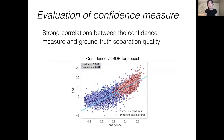The first thing we investigate is whether the confidence measure correlates with ground truth separation quality measured by signal-to-distortion ratio (SDR). In this graph, each dot represents a separated source by the speech model on speech mixtures, and the blue line is the best fit from linear regression. The graph shows a clear relationship between confidence and SDR with an R-value of 0.85. We also note that same-sex mixtures are harder to separate than different-sex mixtures according to both confidence and SDR. We observe similarly strong correlations on the music and environmental domains.